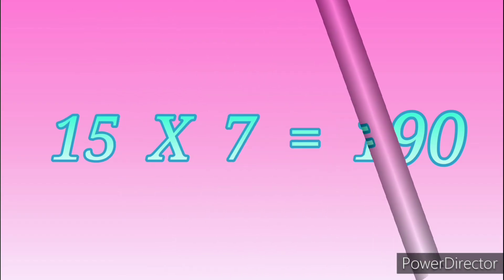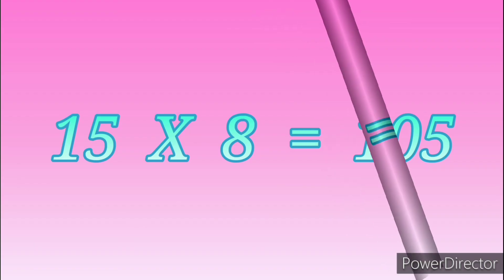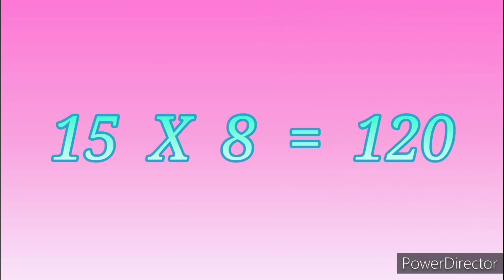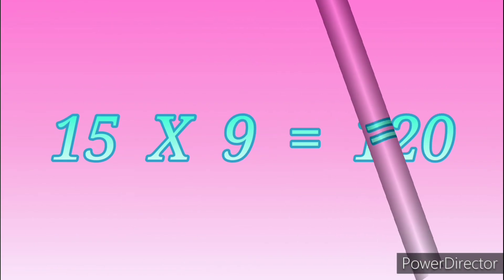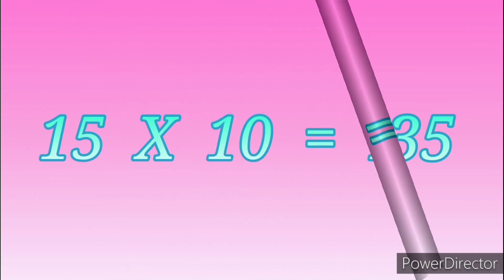Fifteen sevens are one hundred and five. Fifteen eights are one hundred and twenty. Fifteen nines are one hundred and thirty-five. Fifteen tens are one hundred and fifty.